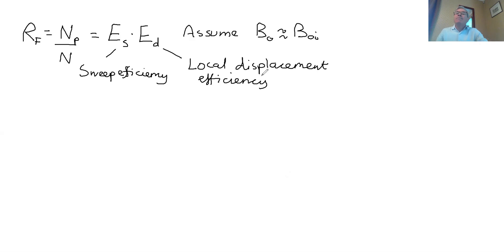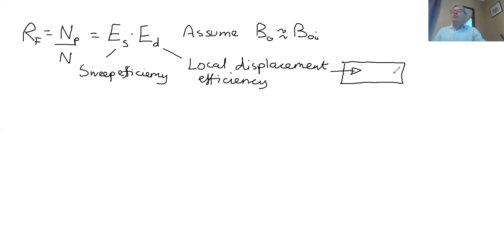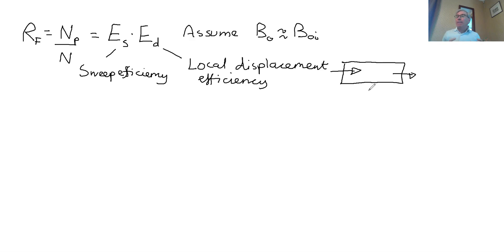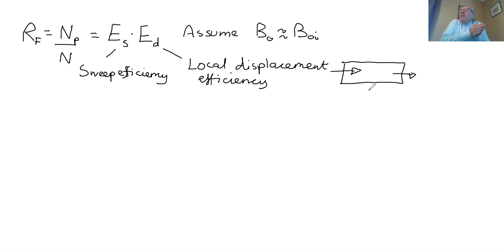This is simply a definition, but now I want to describe what these two terms mean. What the local displacement efficiency represents is that if I have a small piece of rock and I inject water and produce oil, what fraction of the oil that's in place have I recovered? It's simply telling us how much oil have I recovered in a region of rock where the water has gone. This is basically an idealized one-dimensional displacement — that's what you do in an experiment to measure relative permeability, and that's what you analyze in Buckley-Leverett.